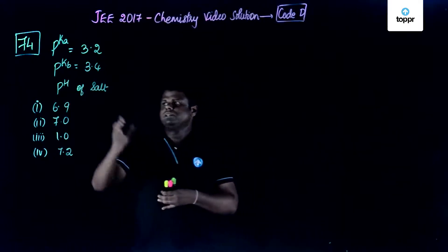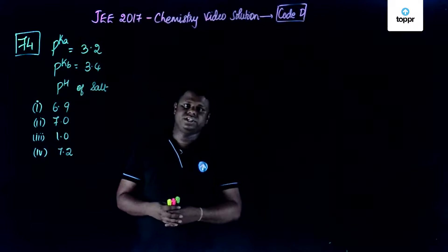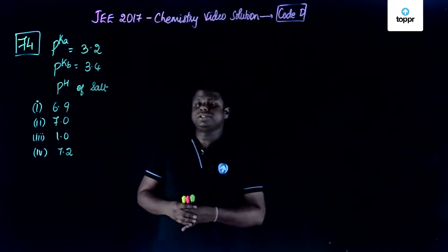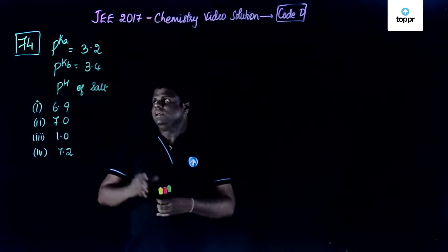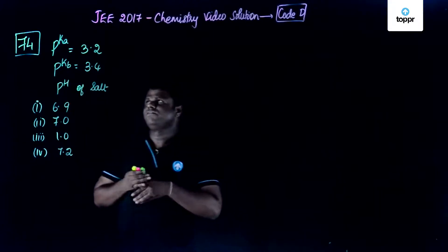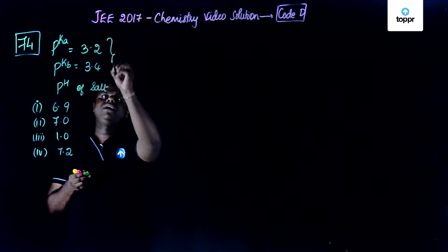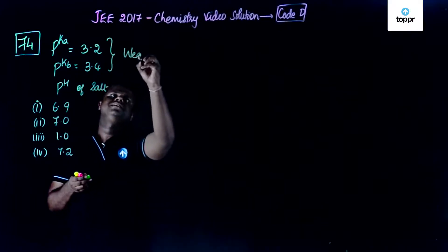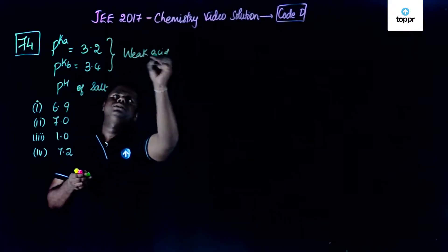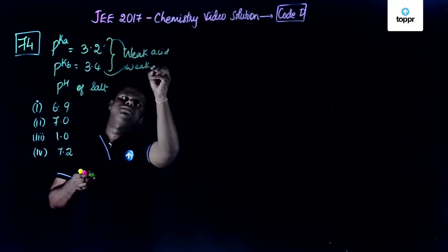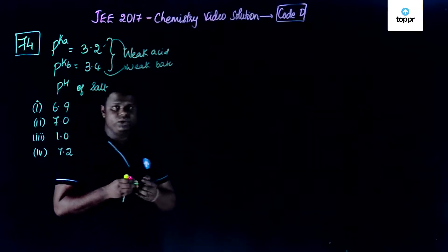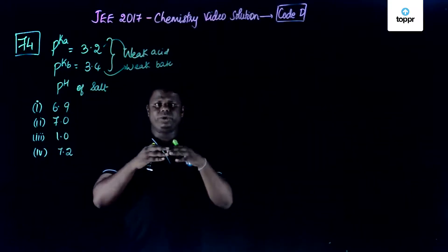Now we are going to discuss the pH. So this question is from the section on equilibria and more specifically on ionic equilibria and pH. This is basically pKa and pKb value for weak acid and weak base. Now weak acid and weak base has reacted to form a salt or they have been mixed together.